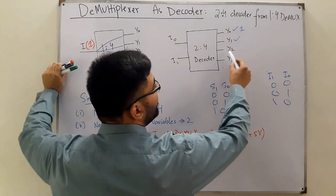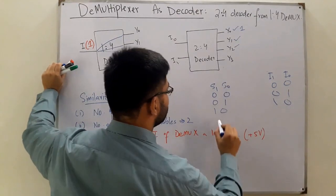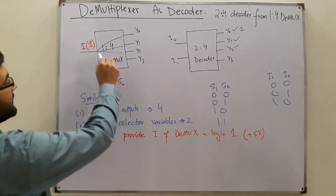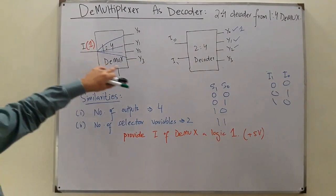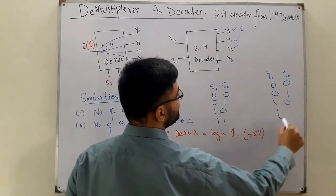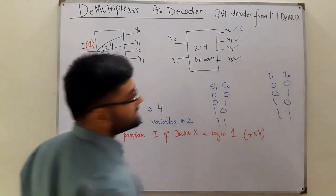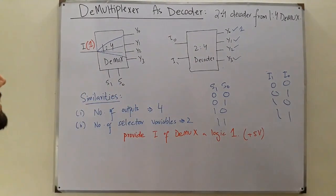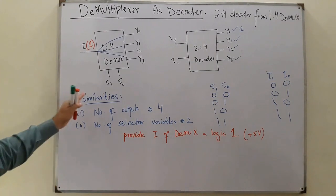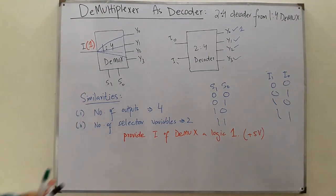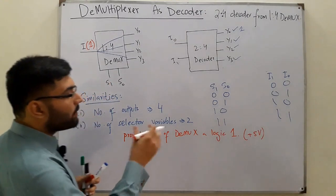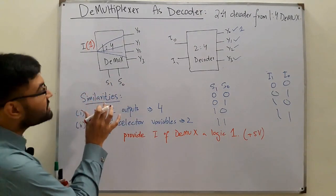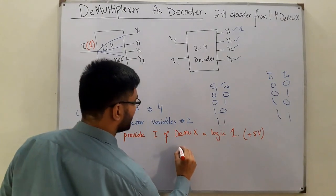Similarly for 11, the input is connected to Y3, and we have a high state, which means Y3 would be one. In decoders, if you have both as one, Y3 is set as one. This means it's now acting as a decoder.